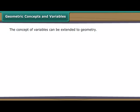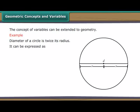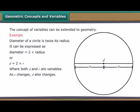Geometry concepts and variables. The concept of variables can be extended to geometry. For example, diameter of a circle is twice its radius. It can be expressed as diameter is equal to 2 into radius, or D is equal to 2 into R, where both D and R are variables. As R changes, D also changes. Let us use variables to express perimeters and areas.